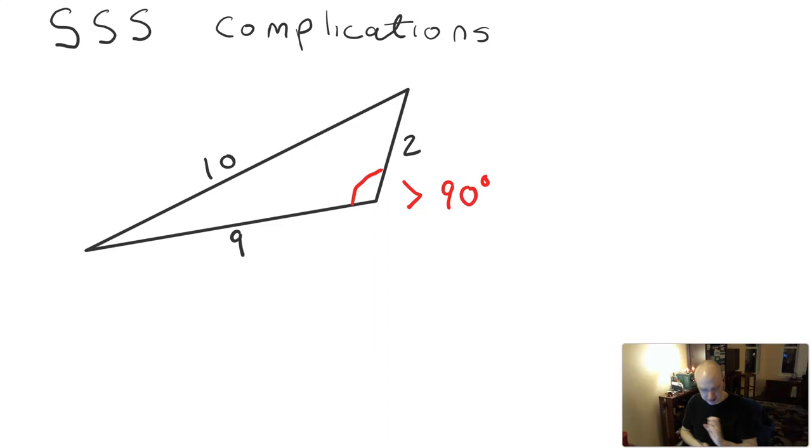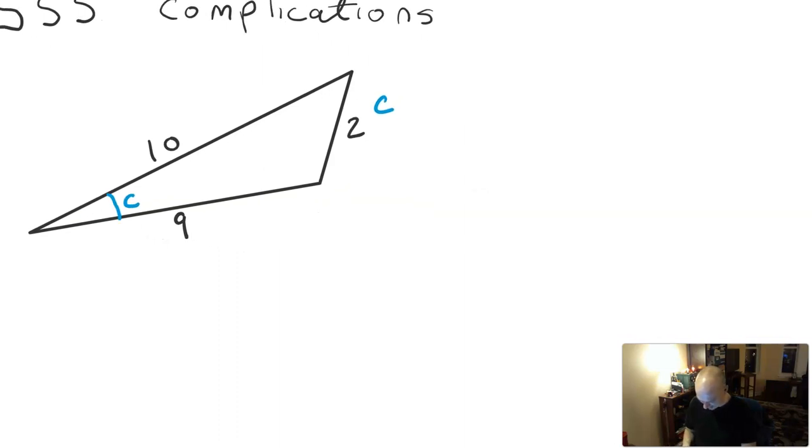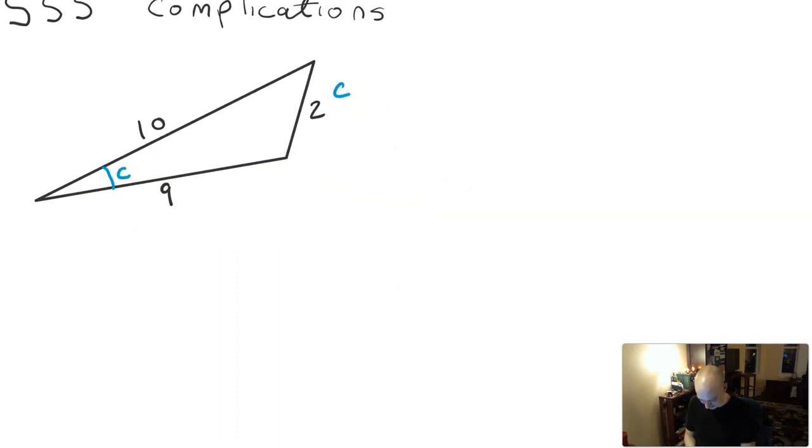But something really strange can happen if you try to solve for this triangle in the wrong way. So here's what I mean by the wrong way. Say that I want to solve for this angle. I'm going to call this little c, and this angle call big C. And I use the law of cosines to solve for that angle, little c. So here's what that would look like.